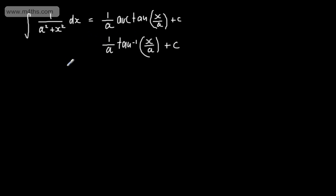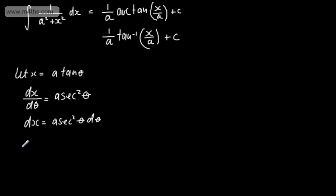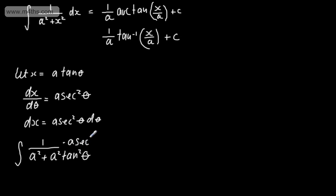Let's look at deriving this particular result. We can do this by using a substitution. We let x be equal to a tan θ. If we differentiate both sides with respect to θ, we have dx/dθ equal to a sec² θ. So at this stage, we could write that dx is equal to a sec² θ dθ. What I'm now going to do is substitute that into the original integral. So here we have the integral of 1 over a squared plus x squared, and an expression for x squared would be a squared tan squared θ, so we can write a² tan² θ, and then in the numerator we're going to have a sec² θ dθ.